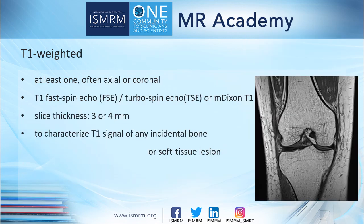T1-weighted images are usually included in one plane to facilitate assessment of any incidental bone marrow lesions or soft tissue lesions, and to characterize the T1 signal of any incidental findings.